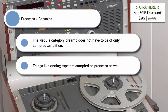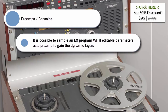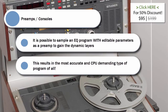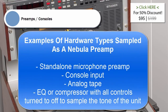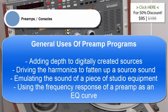Some developers provide types of programs that were traditionally sampled as EQ programs with editable parameters as preamps — this has the advantage of sampling with dynamic layers for added realism, but also means each EQ preset must be a different program that must be loaded. It's also possible to sample an EQ program with editable parameters as a preamp to gain the dynamic layers; this result is the most accurate and CPU-demanding type of program of all, and is generally too much for general use. Examples of hardware types sampled as a Nebula preamp include: standalone microphone preamp, console input, analogue tape, and EQ or compressor with all controls turned to off to sample the tone of the unit. General uses of preamp programs include: adding depth to digitally created sources, driving the harmonics to fatten up a source sound, emulating the sound of a piece of studio equipment, and using the frequency response of a preamp as an EQ curve.